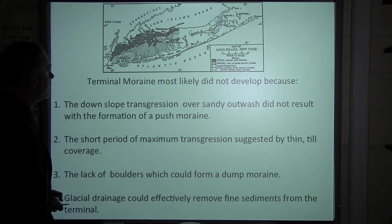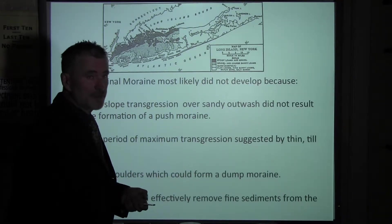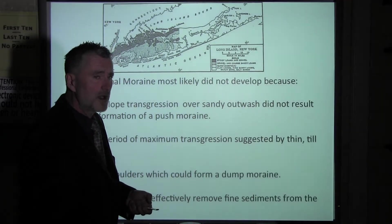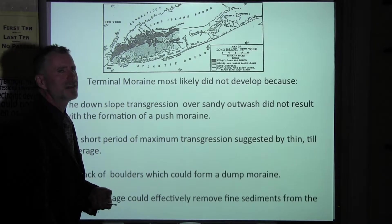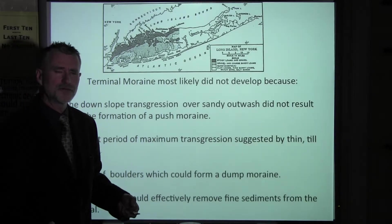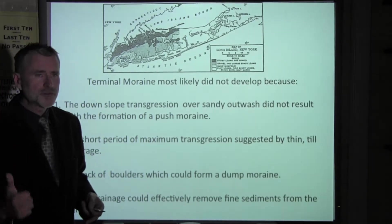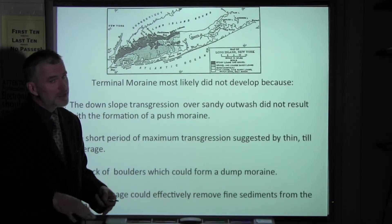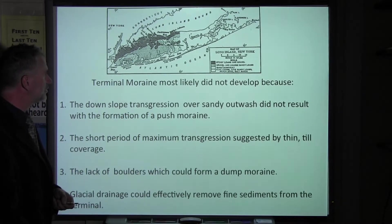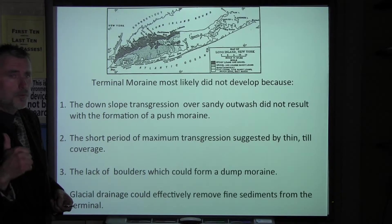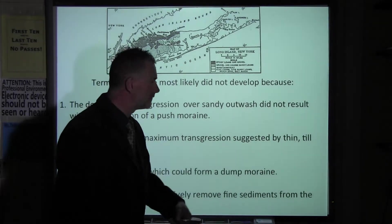In general, we can say that we can trace the boundary of maximum extension, but as far as a terminal moraine is involved, the terminal moraine most likely did not form. The reason is because the glacier slid down the slope. The sediment which was carried was very fine and very easily removed by glacial drainage in front. On top of this, there were no boulders or cobbles which would build a terminal moraine in front of the glacier.